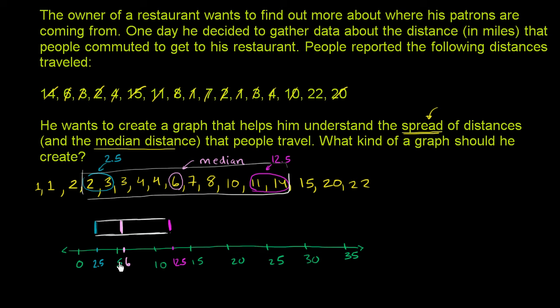And then the whiskers of the box and whisker plot essentially show us the range of our data. So essentially if we want to see, look, the numbers go all the way up to 22. Our numbers go all the way up to 22. And they go as low as 1. So 1 is right about here. They go as low as 1. So there you have it. We have our box and whisker plot.